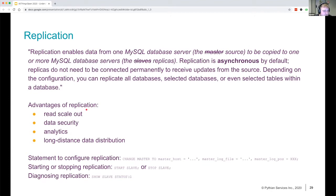There are some statements you can use to configure replication. You do CHANGE MASTER TO — which will probably be changed to CHANGE SOURCE TO in the future. You can do START or STOP SLAVE, which will become START or STOP REPLICA. And to diagnose replication, you can run SHOW SLAVE STATUS, which in the future will be SHOW REPLICA STATUS.